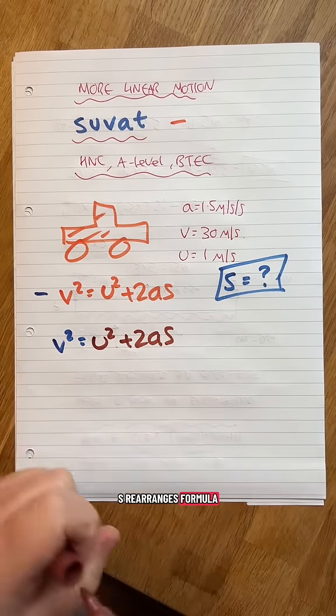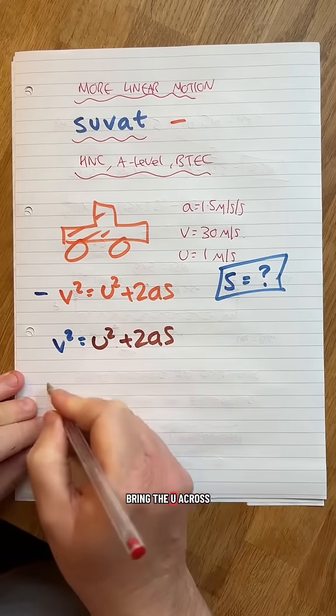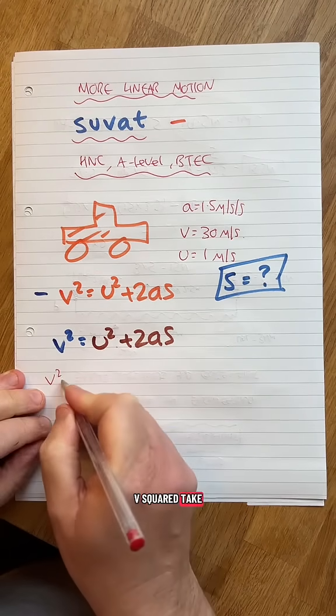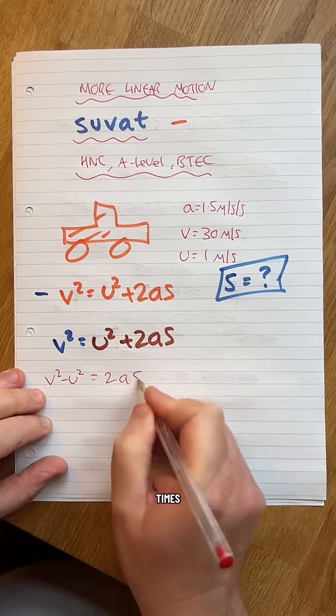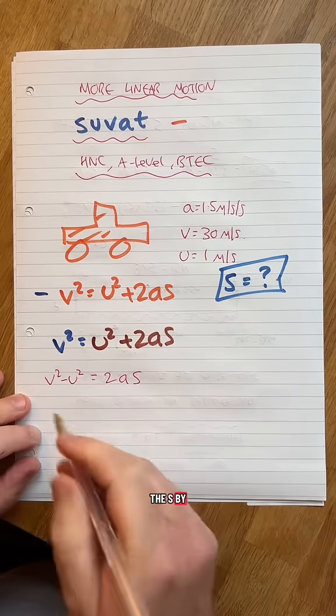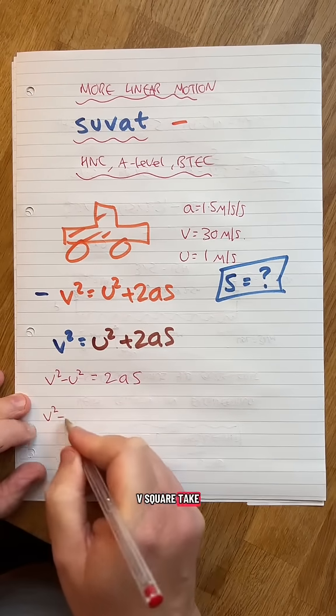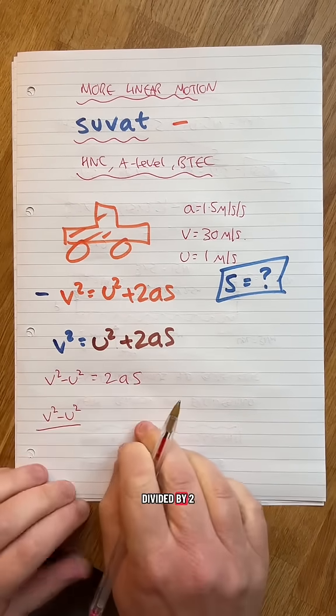Rearrange this formula. We've got to rearrange that. I'm going to bring the U across. V squared take away U squared equals 2 times A times. I'm going to leave the 2, I'm going to leave the S by there and do this. V squared take away U squared divided by 2 times A.